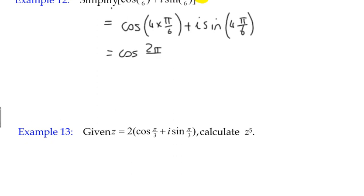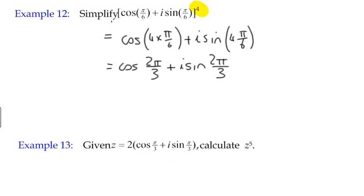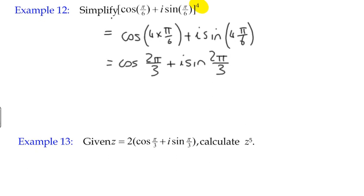And that is De Moivre's theorem in its simplest form, where we're taking the power and either we're raising the modulus to that power, and then we're multiplying the argument by four and simplifying the argument as much as we can.